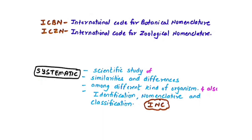The word 'systematics' refers to a scientific study of similarities and differences among different kinds of organisms. It involves three steps: Identification, Nomenclature, and Classification — in short, INC.